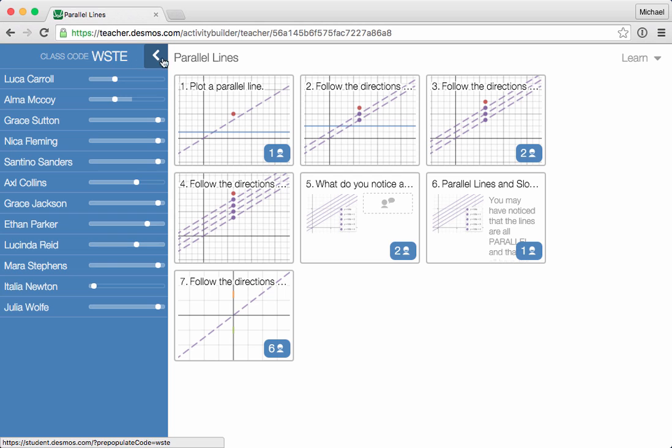Here at the top we see the class code, the activity title, and your username. Clicking the title will take you back to the activity page. If you need to head back to teacher.desmos.com, just type that into the URL bar at the top of your browser.